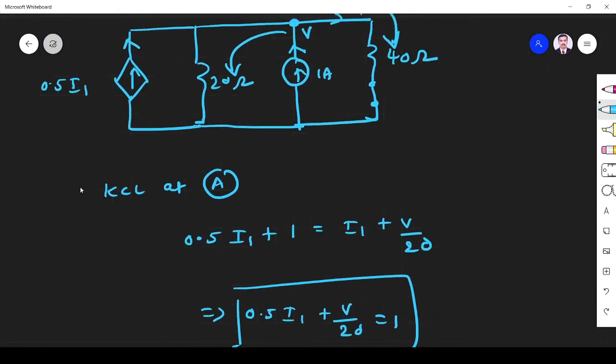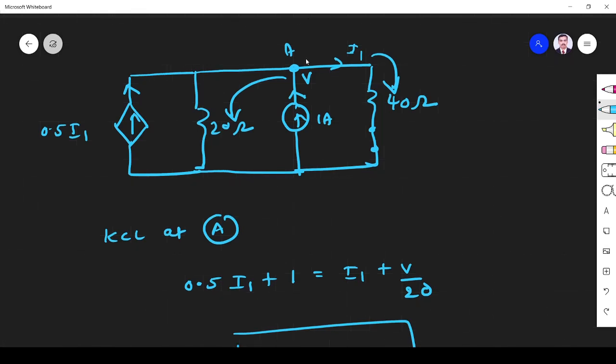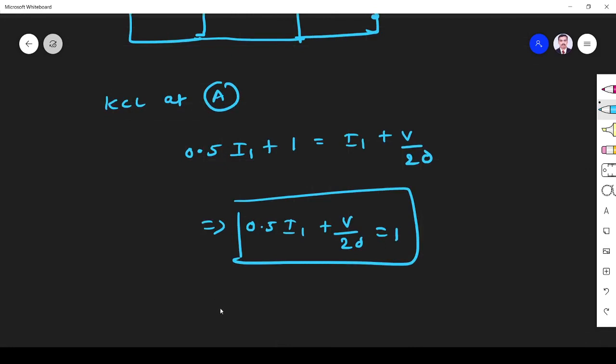So now I find I1. What is I1? From the diagram, I understand this is V. I1 is equal to V by 40. So this is equation number one. This is equation number two.